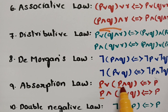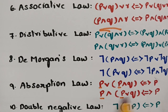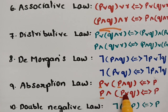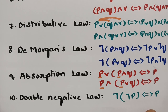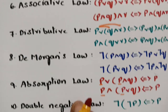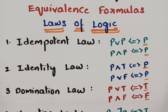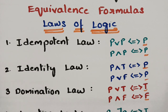Absorption law: p OR (p AND q) equals p — p is absorbed when it appears two times. Double negation: minus of minus equals plus, so negation of negation p equals p. These are all very simple, and if you follow these formulas you can definitely solve any problem on equivalence.